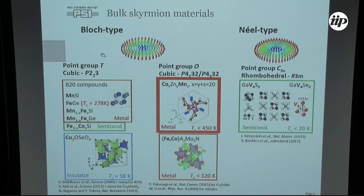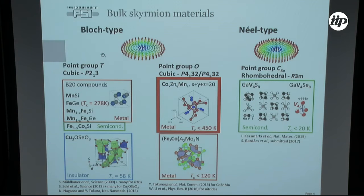I'll talk about bulk skyrmion materials, in particular Bloch-type materials. These are all the materials I'm aware of which host skyrmions — in the end there aren't that many, but the list grows slowly over the years. The most famous is manganese silicon, within which skyrmions were first discovered; it belongs to the chiral tetrahedral point group. The material I'll discuss today exists in another point group, a chiral octahedral point group. Like all of these materials, they are in cubic lattices that are non-centrosymmetric with finite Dzyaloshinskii-Moriya interaction.